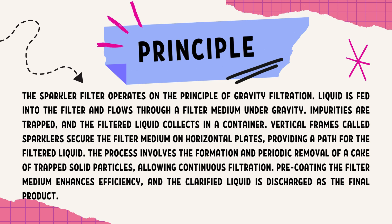The filtered liquid is collected in a container below the filter. The filter medium is held in place on the filter plate by vertical frames called sparklers. These sparklers hold the medium securely while allowing the liquid to pass through, and also provide a path for the filtered liquid to exit. In summary, the sparkler filter operates based on the principle of filtration through horizontal plates covered with filter medium. The liquid slurry containing impurities is introduced, solid particles are trapped and form a cake, which is periodically removed to allow continuous filtration.